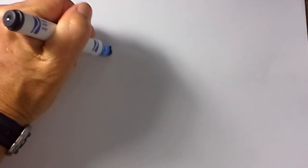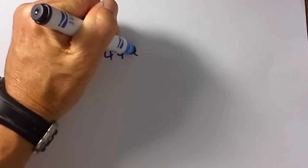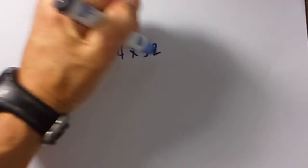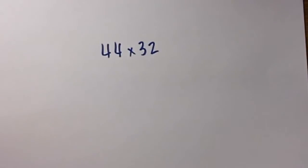Hey, welcome to MooMooMath and another math trick on multiplying two-digit numbers. Let's go ahead and jump right in. Let's see if we have to multiply 44 times 32.